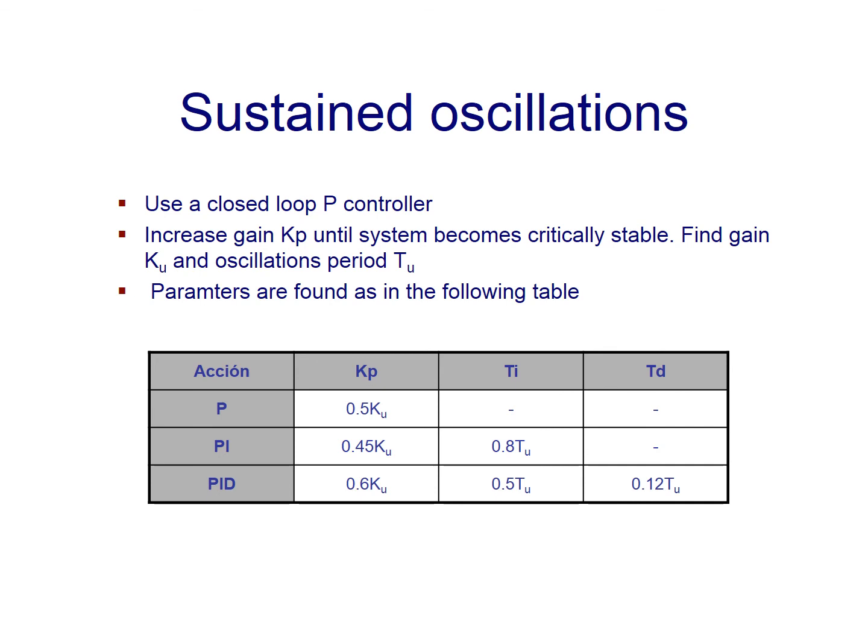Then, parameters are found as in the table. So, for example, having these values Ku and Tu, PID parameters are going to be like this: Kp equals to 0.6 Ku, Ti 0.5 Tu, and Td 0.12 Tu.